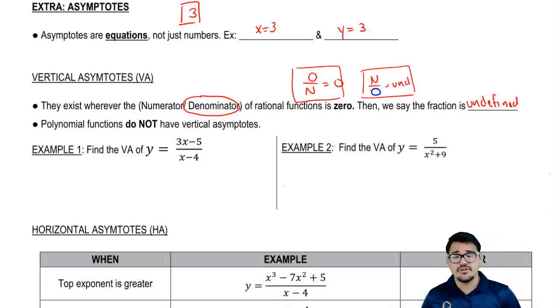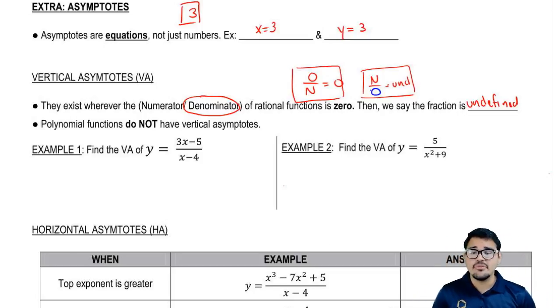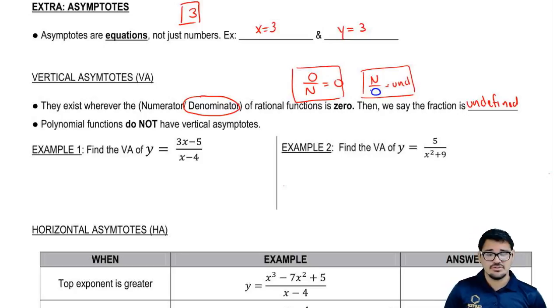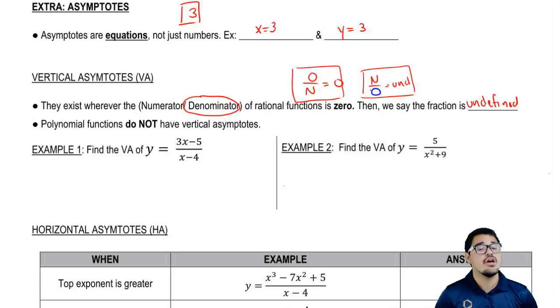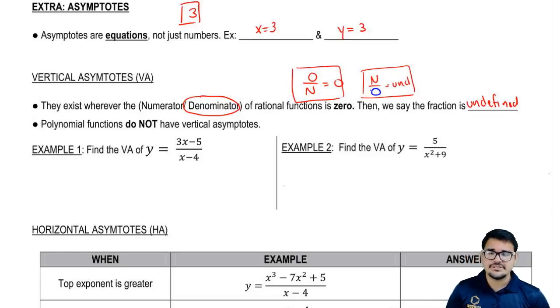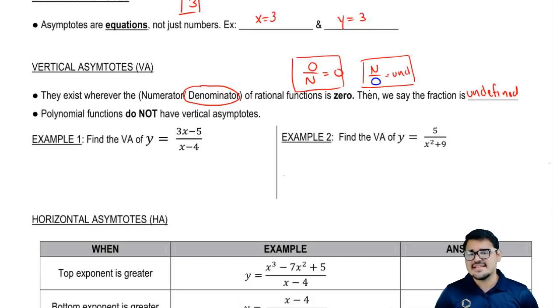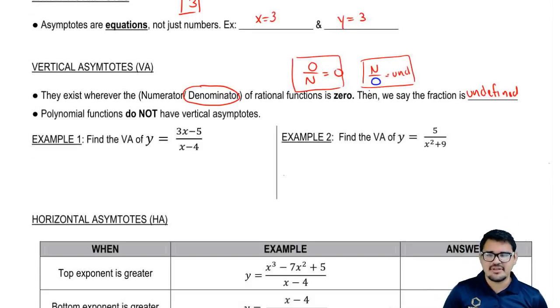Here's a little note: whenever we think about polynomials, they do not have vertical asymptotes. So whenever you look at a polynomial and they ask you for a vertical asymptote, you automatically say there is none. So let's jump into an example to apply this.